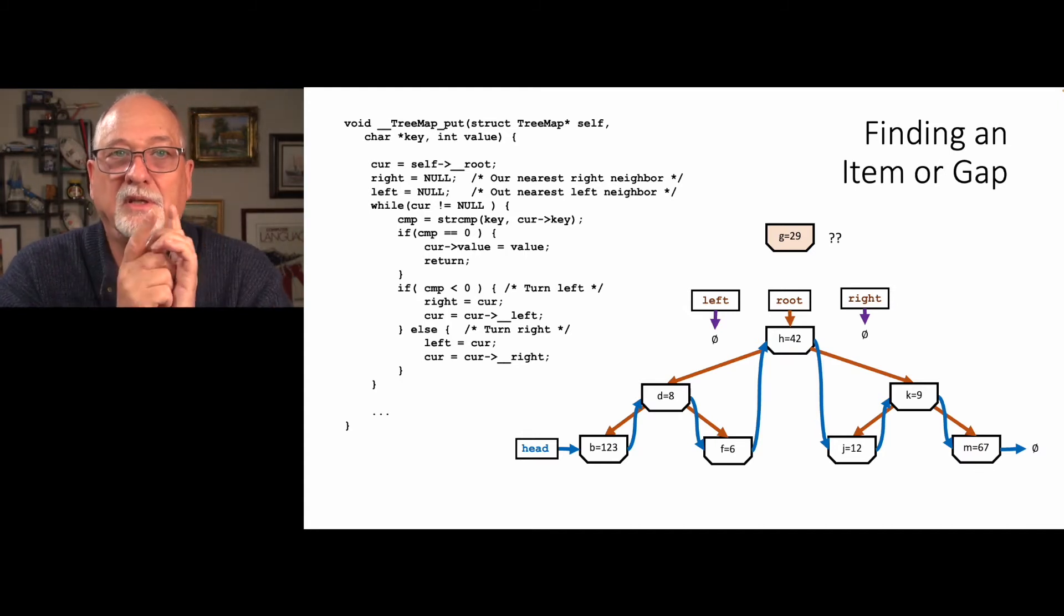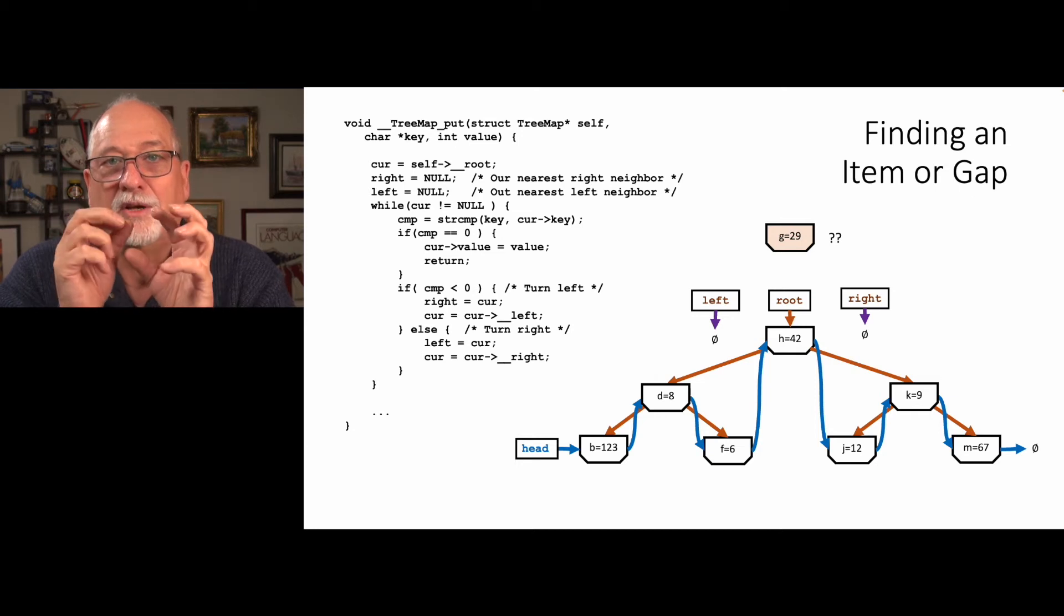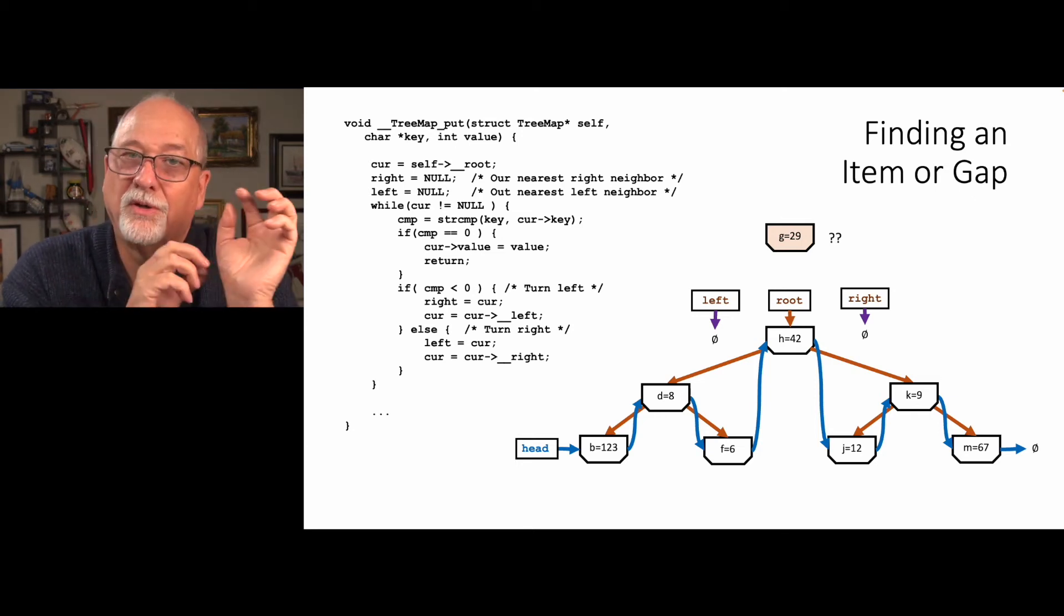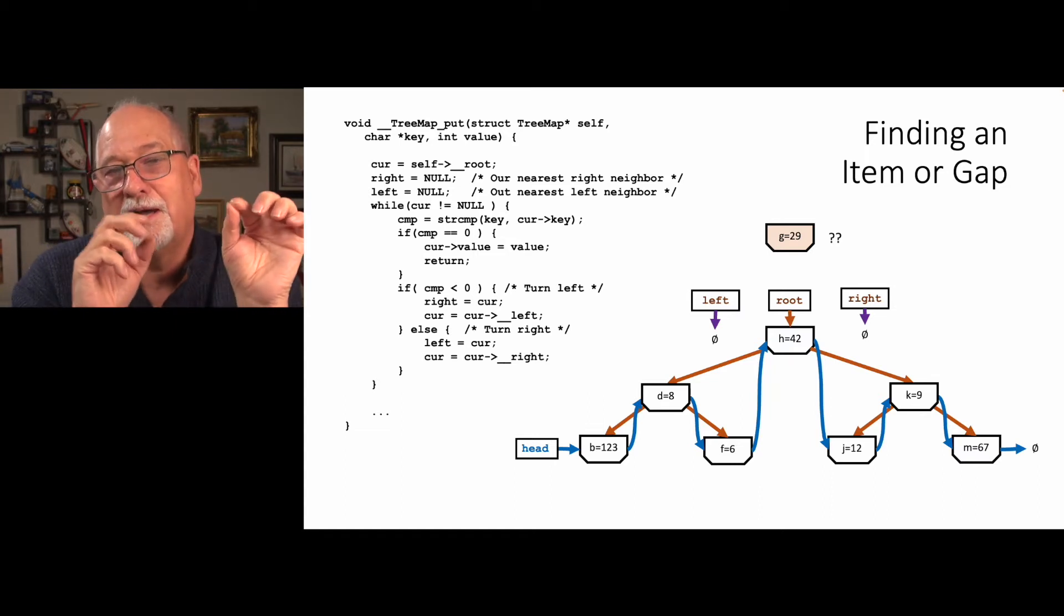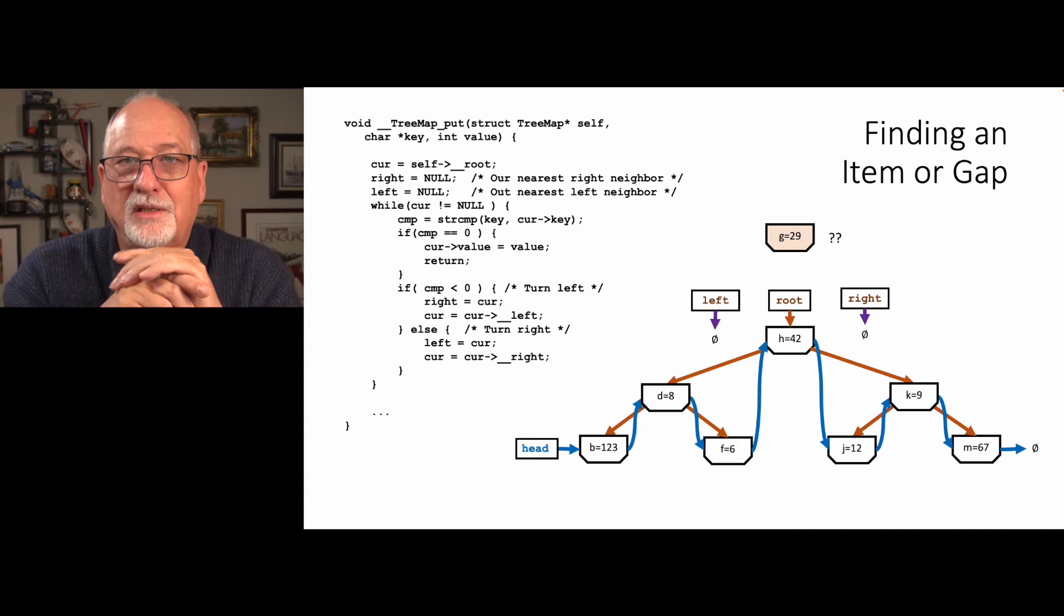This left and this right are, as we're walking down the list, we're going to keep track of the smallest greater item and the largest less item. That's what this left - we got cur, we got left, and we've got right. You can think of left and right as breadcrumbs. We're going to throw breadcrumbs - when we turn left, we're going to remember the right. When we turn to the right, we're going to remember the left.